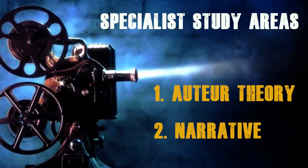The specialist study areas here are auteur theory and narrative. We'll need to look at how this film uses narrative and how its use of narrative might be experimental. This could include a study of what is meant by a traditional narrative, which we'll need in order to look at how this film might or might not deviate from that. We'll also need to look at Tarantino as an auteur.